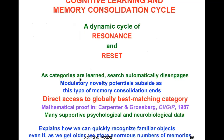It is a theorem that as categories are learned through this matching process, search automatically disengages, leading to direct access without search to the globally best-matching category. This explains how we can quickly recognize familiar objects like your mother's face, even as we store enormous numbers of additional memories with age. You don't have to search your whole repertoire when you see mom — you get direct access and quickly say hi.